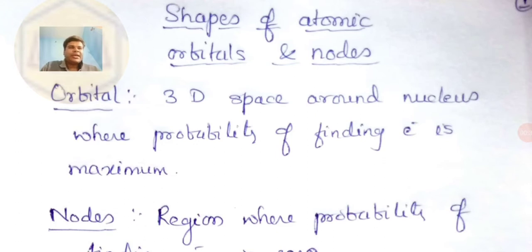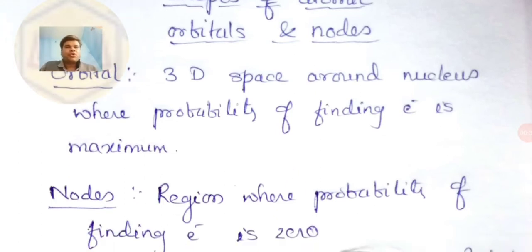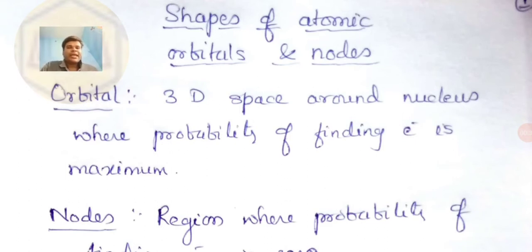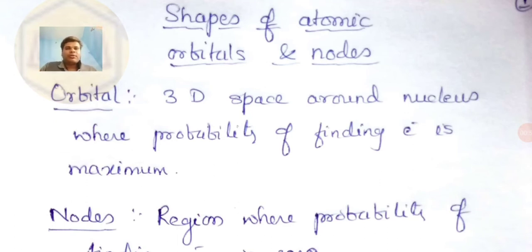This concept comes from the quantum mechanical model of the atom. In the quantum mechanical model, electrons are said to be present in orbitals. An orbital is the 3D space around the nucleus where the probability of finding an electron is maximum. The Schrödinger wave equation is solved and its solutions are three-dimensional plots that represent the shapes of orbitals, indicating the probability of finding an electron.